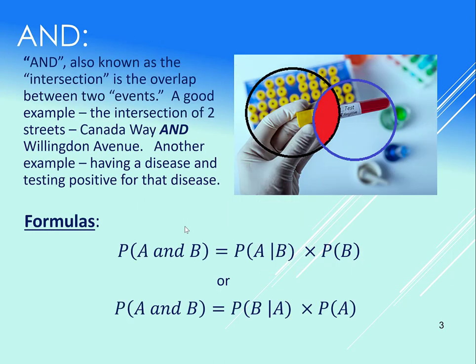The AND is also known as the INTERSECTION, or if you will, it's the OVERLAP between two events. It's when both events are happening or are true, depending what we're talking about. So an example here, if you are at the intersection between Canada Way and Willington, you say you're at Canada Way and Willington Avenue.